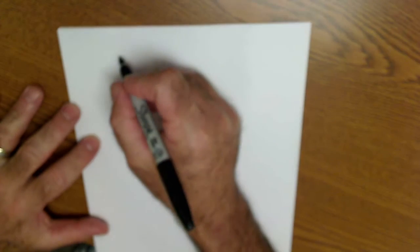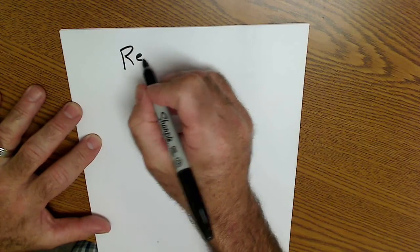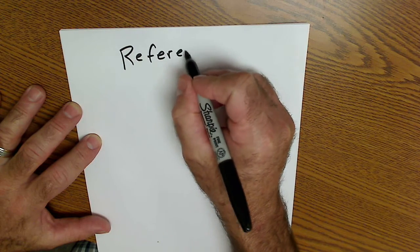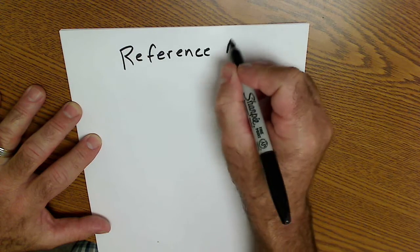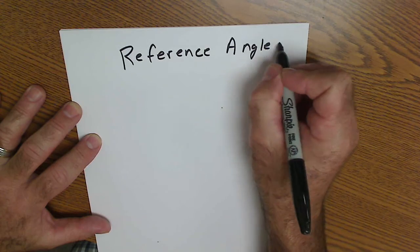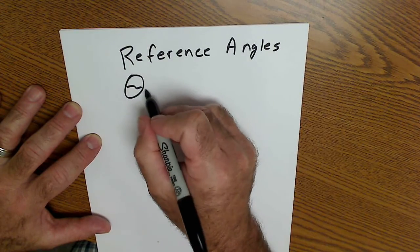Okay, today we're going to learn about reference angles in trigonometry. Reference angles are represented with a theta sub r.